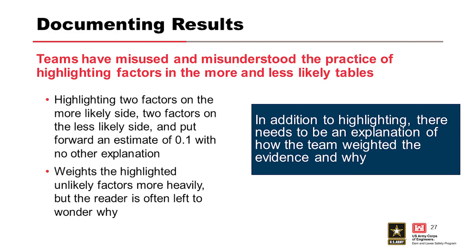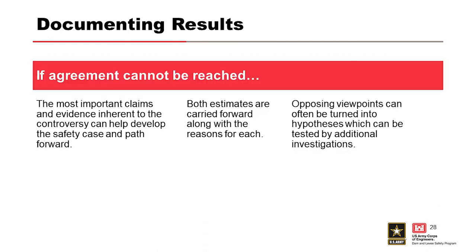In terms of documenting the results of the team elicitation, we have to build a case for each probability estimate and highlight the key pieces of evidence. A common misuse is highlighting multiple factors on both the more and less likely side, then making an estimate that's obviously weighted one way with no explanation — that does the reviewer no good. The highlighted factors should only be the key factors that drove the estimate. When multiple factors are highlighted, there needs to be some explanation of how the team weighed the evidence and why. If the team cannot reach consensus, both or multiple estimates can be carried through the event tree to demonstrate sensitivity; this usually leads to recommendations for additional investigation to reduce uncertainty.